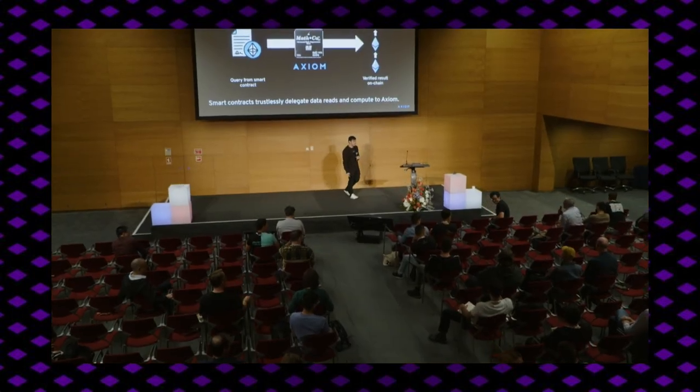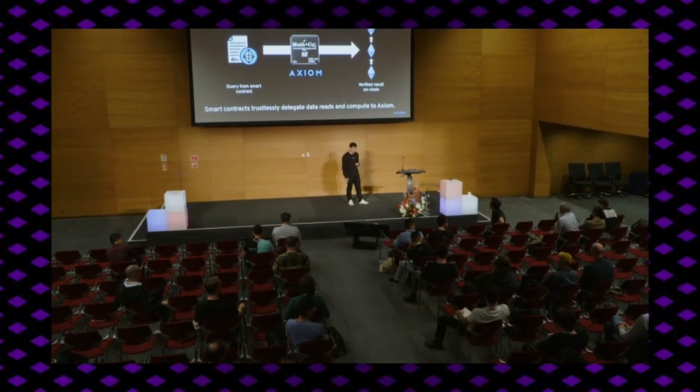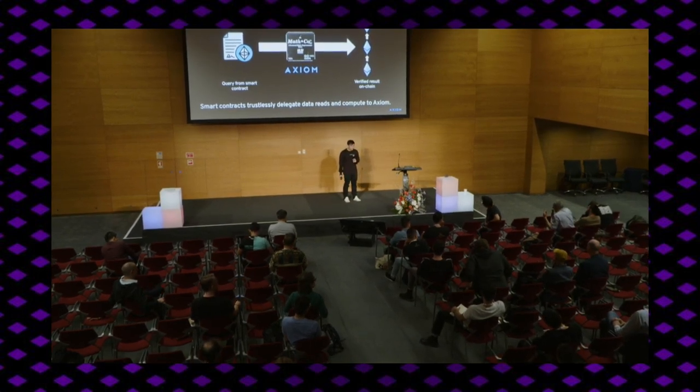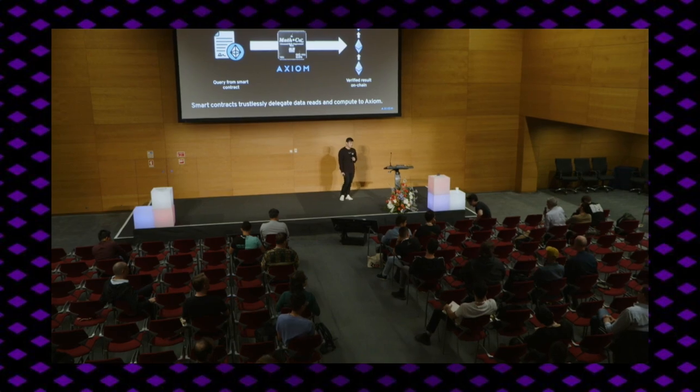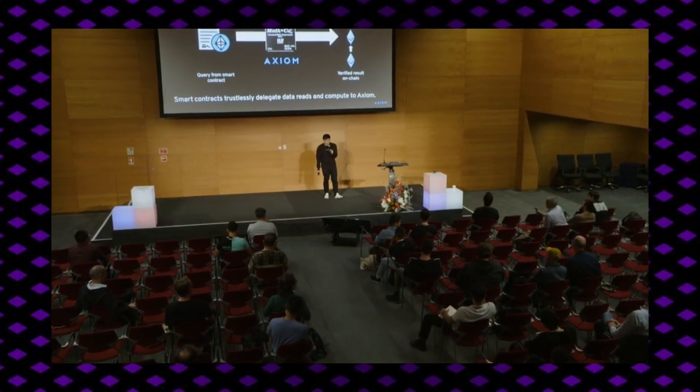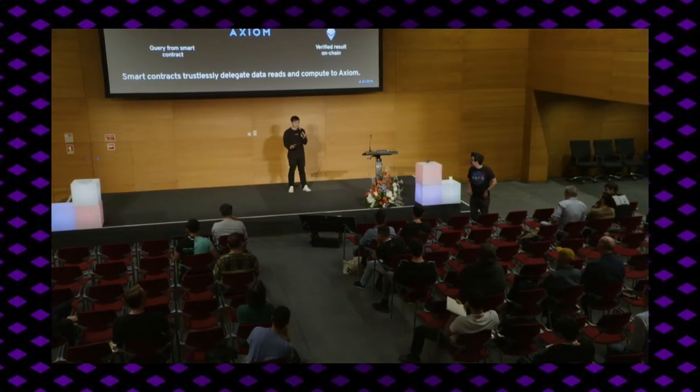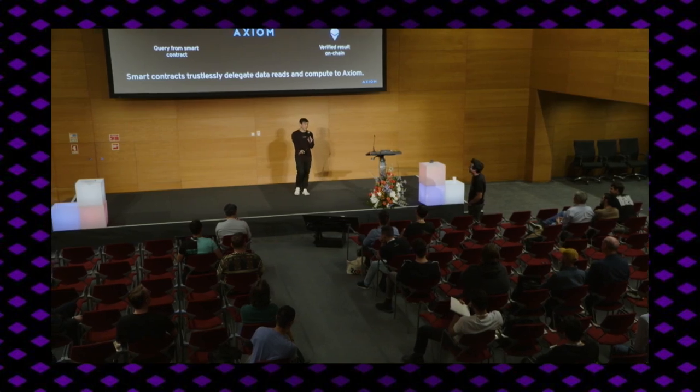Question about the proving system: We're using Halo 2 with the KZG backend — the same fork of Halo 2 as PSE and Scroll are using for the ZKEV. We're proving pretty big statements, so we make pretty heavy use of non-native aggregation and recursion. We've actually open-sourced all of our code, so you can check out the details on our GitHub.